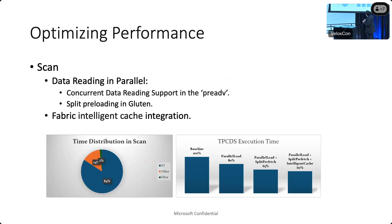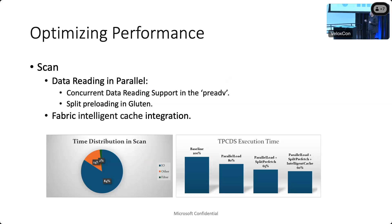For parallel reading, we enabled the vectored API in buffer input and implemented parallel data reading support in the storage adapter using the preadv method. With this support, we see about a 20% performance gain compared to the baseline — the total TPC-DS time without the optimizations. We also enabled the prefetching feature on the Gluten side. We found a memory leaking issue with this feature, have a PR under review to fix it, and applied it internally — seeing about a 15% performance gain.